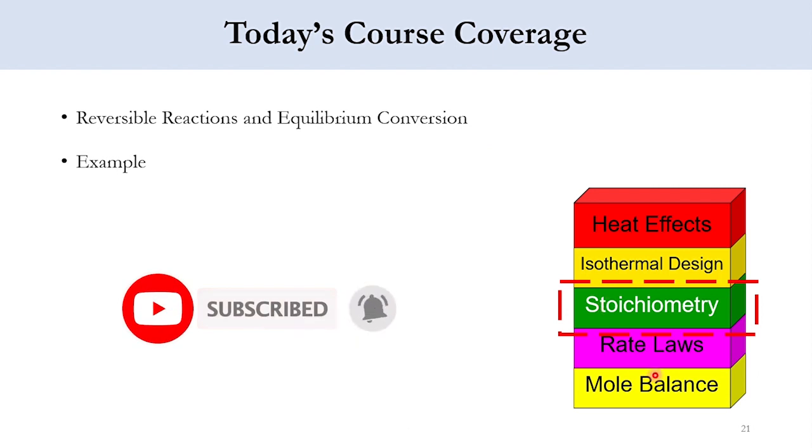We have already covered building block number 1, which is mole balance related to chapter number 1 and chapter number 2 of the book Elements of Chemical Reaction Engineering by Scott Fogler. For building block number 2, which is rate law, we have covered chapter number 3, and for building block number 3 we have covered chapter number 4, stoichiometry. We will be solving the last example related to this chapter.